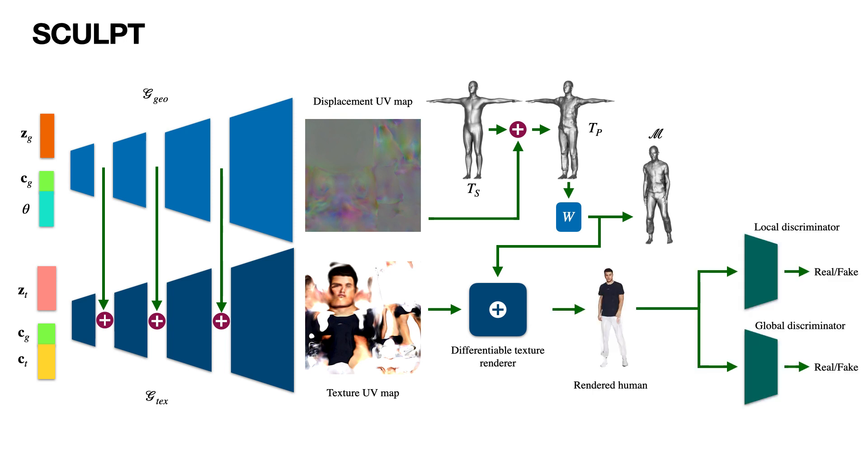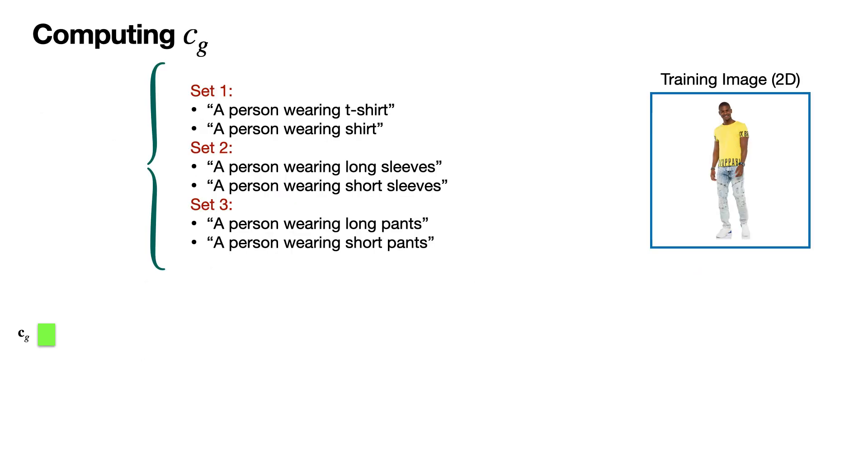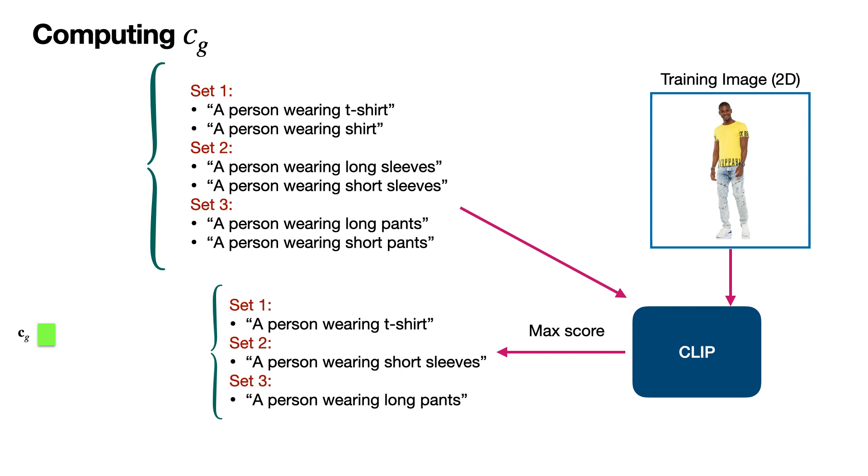These renderings are then passed as fake images to a local and a global discriminator. The clothing type categorical label CG is computed by utilizing CLIP on the fashion images. We devise three different prompt sets for a particular image as described here. CLIP provides a maximum score to match the best possible text input for each set. We combine these three results into a single categorical label describing the clothing type of the fashion image, similar to the clothing type labels of the geometry generator.